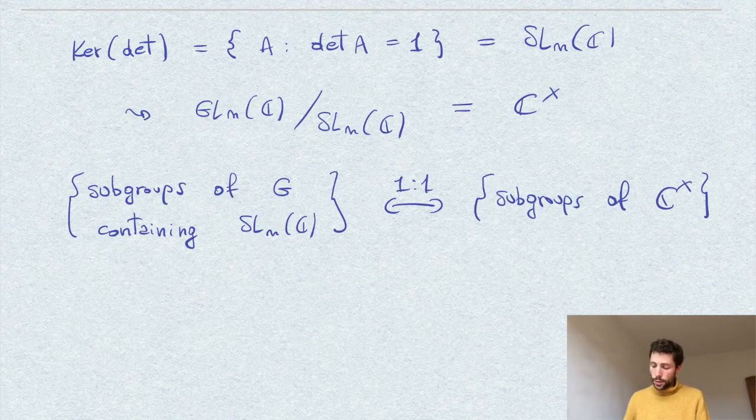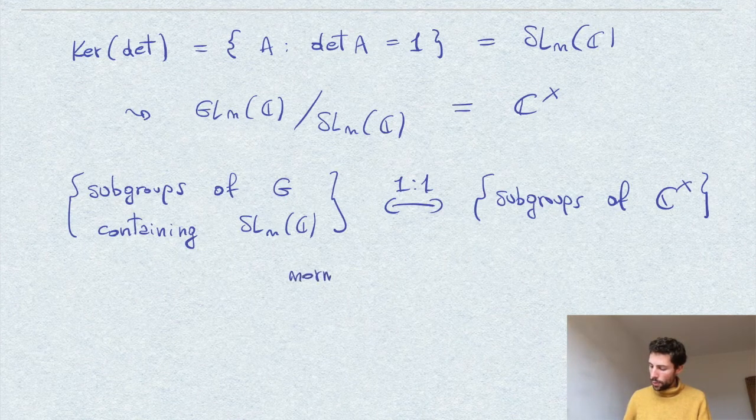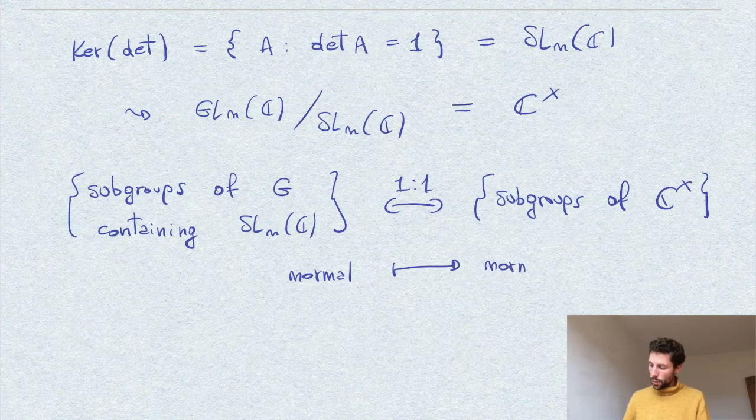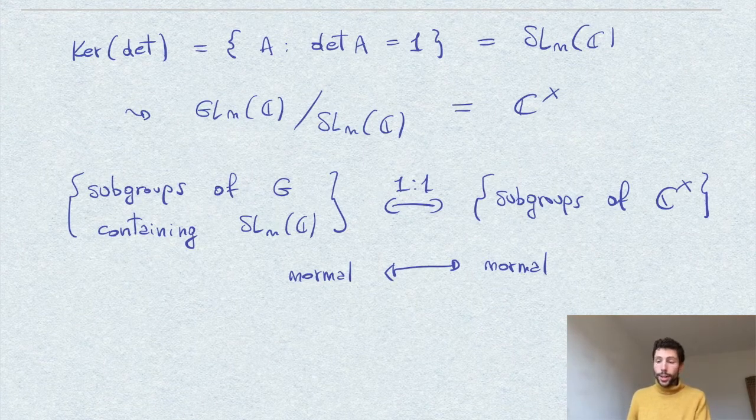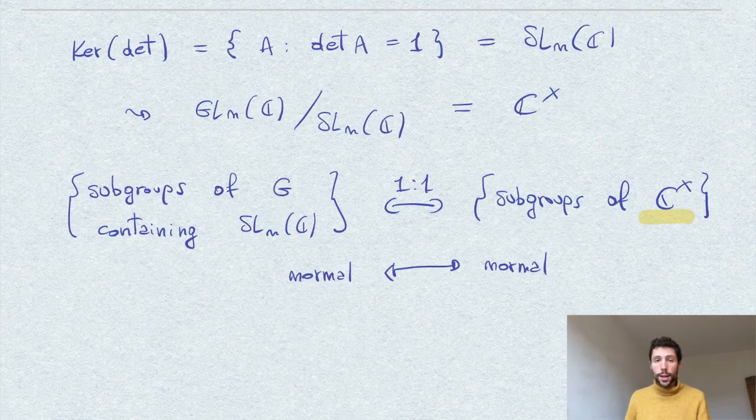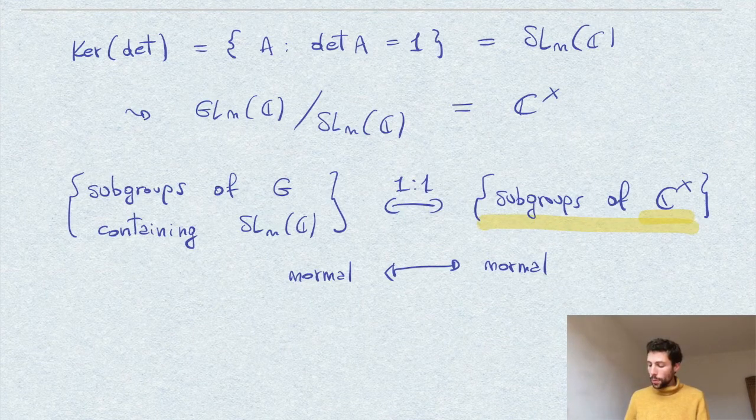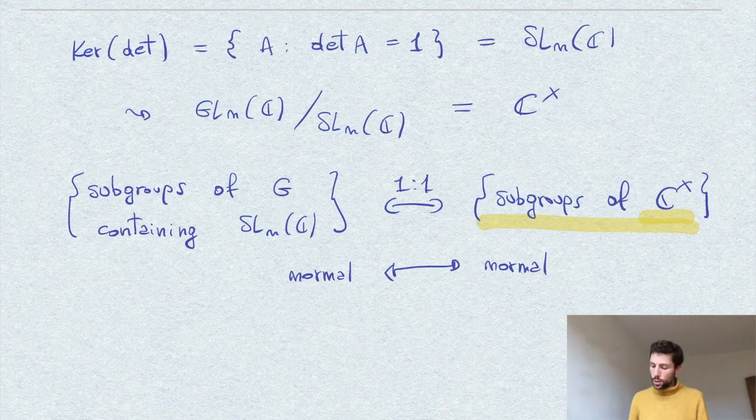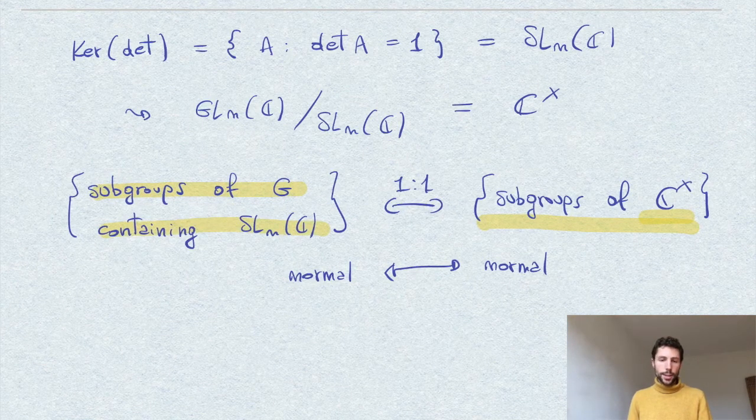Also, this correspondence preserves normality. Therefore, it sends a normal subgroup here into a normal subgroup here and vice versa. So in our special case, of course, we observe that this C star is an abelian group. So every subgroup on this side will be normal. And therefore, we get our statement and we can conclude that each subgroup of GL_n(C) containing SL_n(C) is normal.